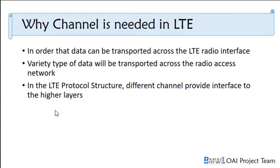Why are channels needed in LTE? There are several varieties of data, so different channels are needed. In order for data to be transported across the LTE radio interface, which has different channel types, a variety of data types will be transported across the radio access network. There are many channels in both the uplink and downlink parts. I will explain only the uplink part, and my partner will explain the downlink.